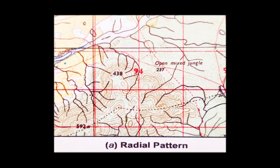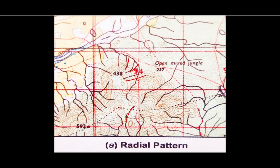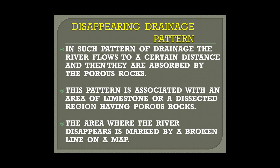In the map, you can see the high elevation marked at the center with streams moving outward in multiple directions — this is the radial drainage pattern.